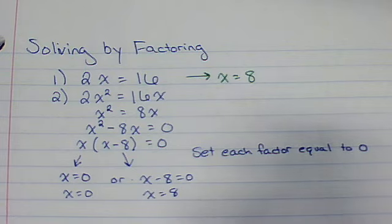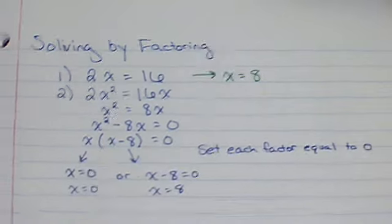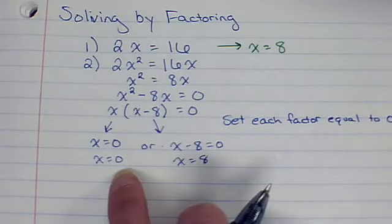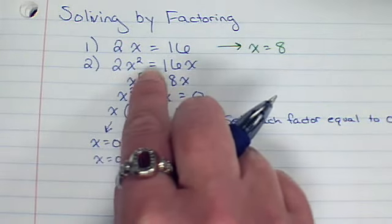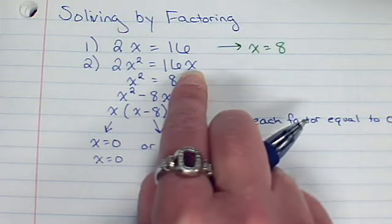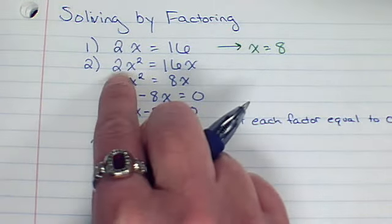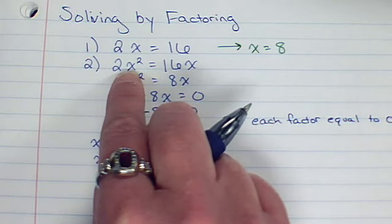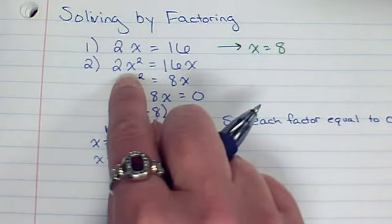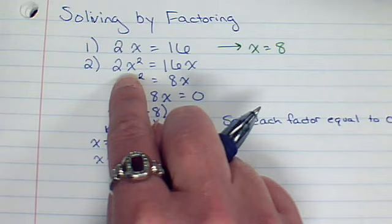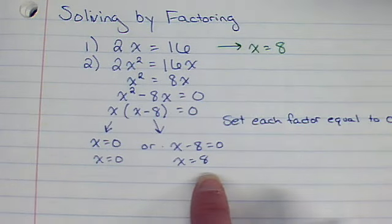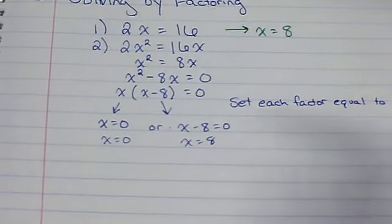Those are our two options for answers. And does it check? If I plugged in 0 here, 2 times 0, does that equal 16 times 0? It does. And if I plugged in 8, 2 times 64 would be 128, and 16 times 8, again, it would work.